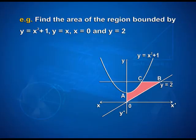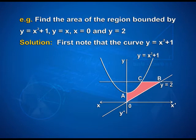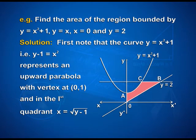Now let us look at one more example. Find the area of the region bounded by y = x²+1, y = x, x = 0 and y = 2. The curve y = x²+1, i.e., y-1 = x², represents an upward parabola with vertex at (0, 1), and in the first quadrant x = √(y-1). The shaded area of region O, B, C, A is to be calculated.